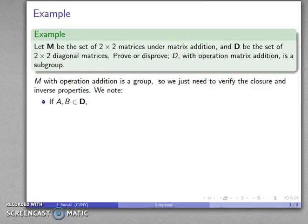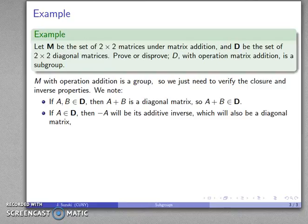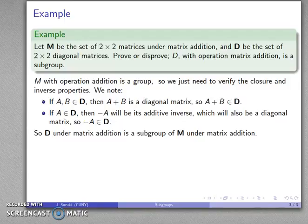Let's take a note. If I have two 2×2 matrices in D, then A plus B is going to be a diagonal matrix, so my sum is in D—I have closure. If A is in D, then minus A will be the additive inverse, and this is also going to be a diagonal matrix, so minus A is also going to be in D. So I have closure, I have the inverse, and that's all I need to verify that my subset is in fact a subgroup.